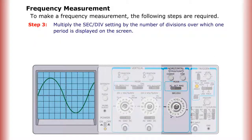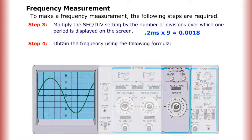Step 3: Multiply the seconds per division setting by the number of divisions over which one period is displayed on the screen. 0.2 milliseconds times 9 equals 0.0018. Then obtain the frequency using the formula: frequency equals 1 over the period. Frequency equals 1 over 0.0018, which equals 555 hertz.